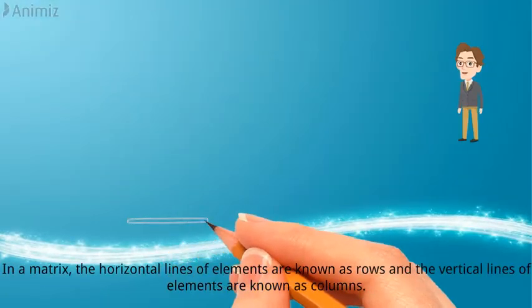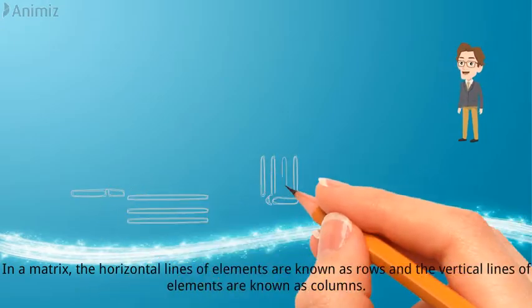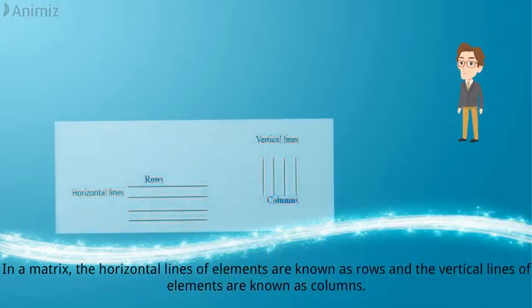In a matrix, the horizontal lines of elements are known as rows and the vertical lines of elements are known as columns.